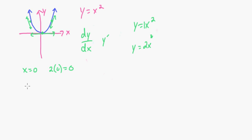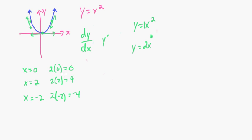Let's say the point is x equals 2. Well, 2 times 2 is 4, so the gradient there is 4. And if it's negative 2, then 2 times negative 2 equals negative 4. It tells you what the gradient of the tangent line is going to be at any point along the function.